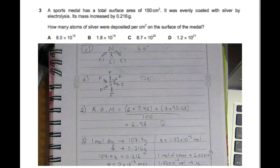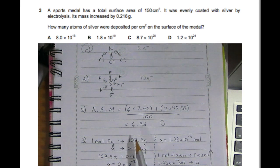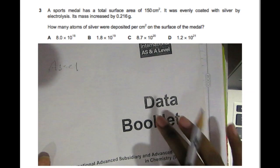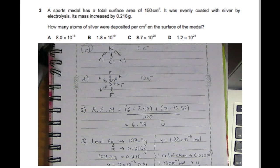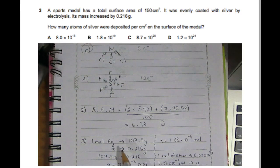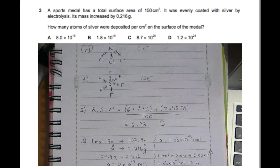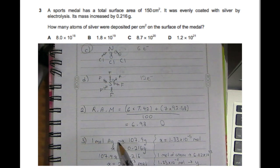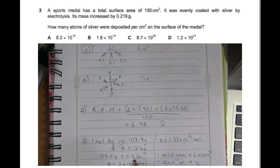For question three, the sports metal has a given total surface area. We take one mole of silver — checking the data booklet, silver is 107.9 grams per mole. The metal's mass increased by 0.216 grams of silver when coated. To find moles, we cross multiply: 107.9 times X equals 0.216 times 1, so X equals 2×10⁻³ moles.